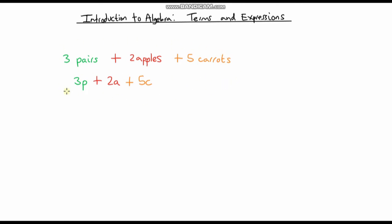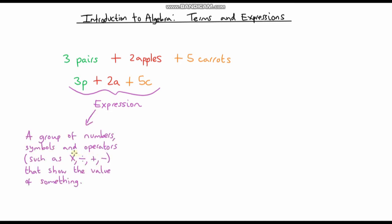What I've written out is called an expression. I'm going to write down the formal definition of an expression in maths. An expression is a group of numbers, symbols, and operators such as multiplication, division, addition, and subtraction that show the value of something.